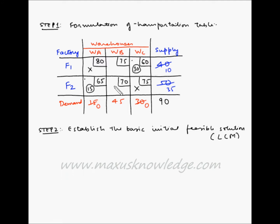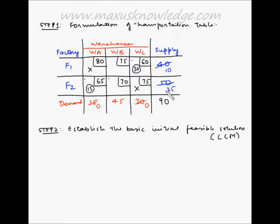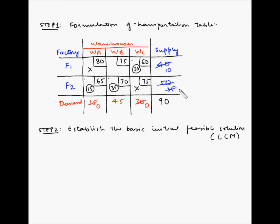From the remaining cells, F2 to WB has the lowest cost at $70. F2 has a remaining supply of 35 units while WB has a demand of 45 units. Since F2 can only supply 35, we allocate 35 units to this cell. The entire supply at F2 is exhausted, but WB still has a remaining demand of 10 units.